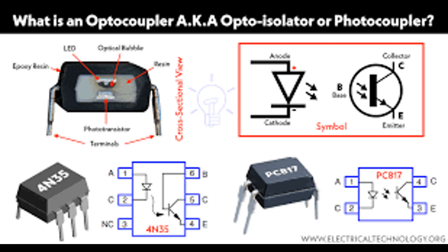An optocoupler, also known as an optoisolator or photocoupler, is an electronic component used to electrically isolate two parts of a circuit while allowing information or signals to be transferred between them optically. It consists of two main components — an input section and an output section — which are physically separated by a transparent or translucent optical barrier, typically a small gap.